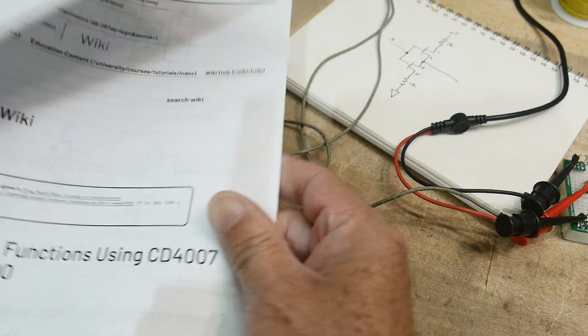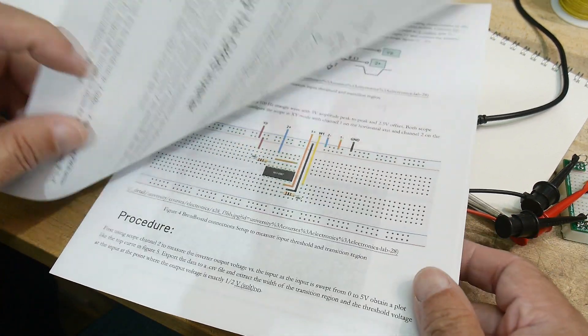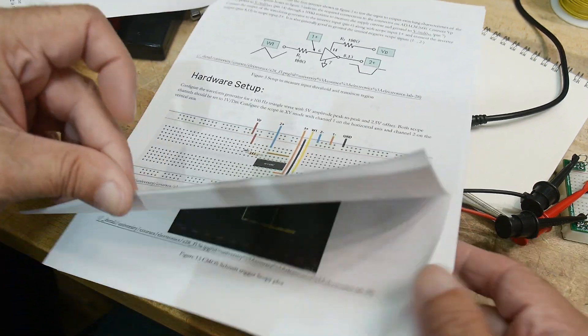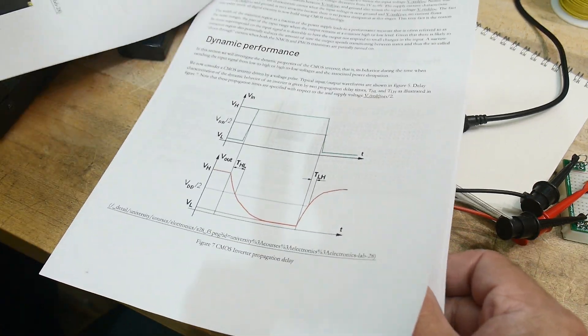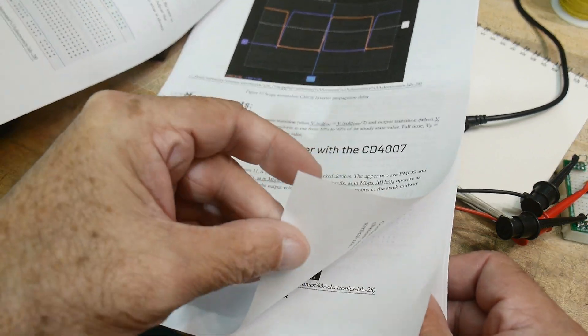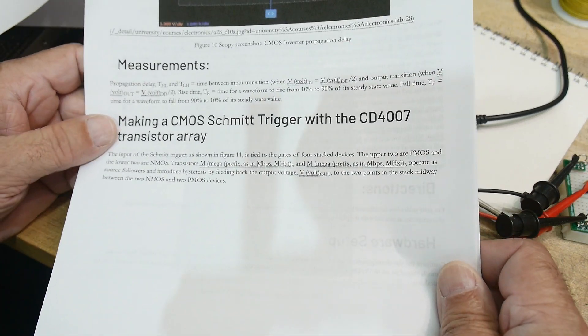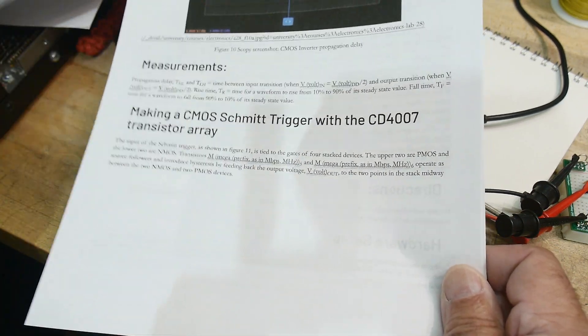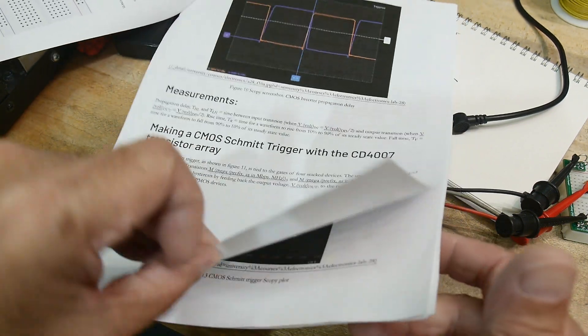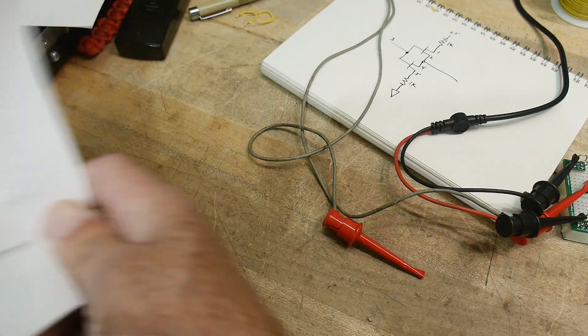So yeah, now they had one thing in here that sparked my interest. So we're making a Schmitt trigger. Schmitt triggers are kind of interesting devices. So let's see how they accomplished a Schmitt trigger with just that many parts, right? Not many parts.